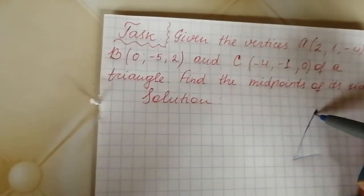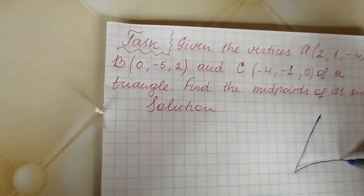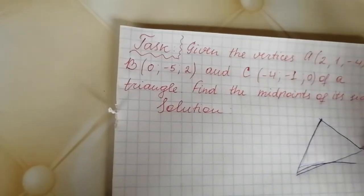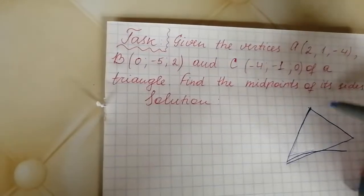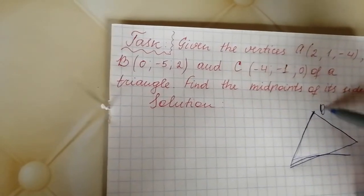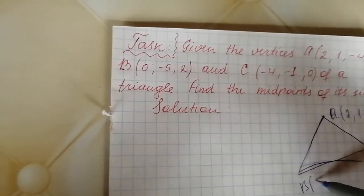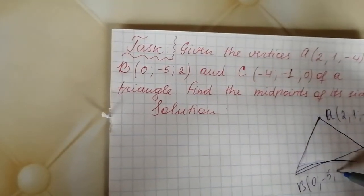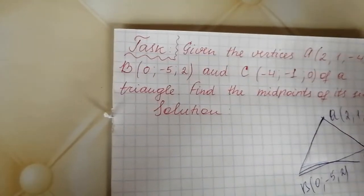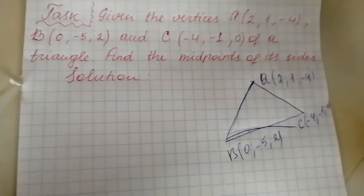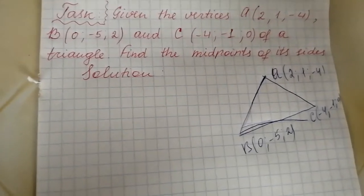For example, this is our triangle. This is the point A: 2, 1, negative 4. Point B: 0, negative 5, 2. Point C: negative 4, negative 1, 0. And here we have to find the midpoints of each side.